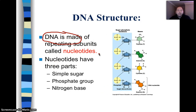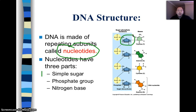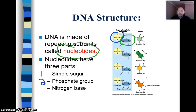DNA is made up of repeating subunits called nucleotides. These nucleotides are made up of three things. One is called a simple sugar — a five-carbon sugar called ribose. The second thing is a phosphate group. Both the phosphate group and the five-carbon sugar are going to make what we call a backbone.